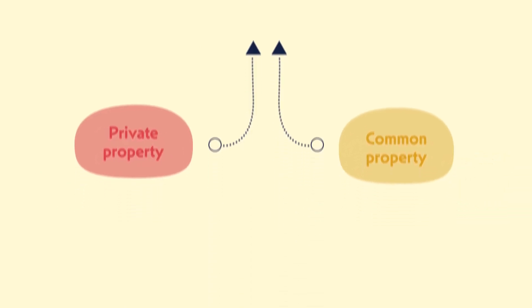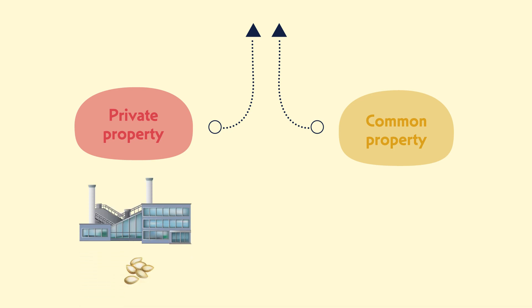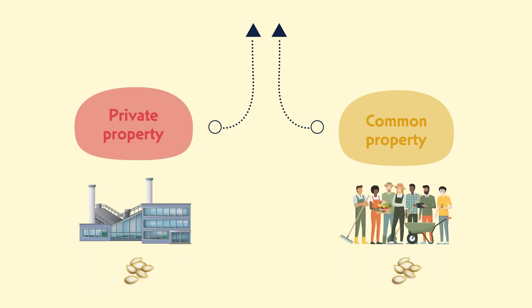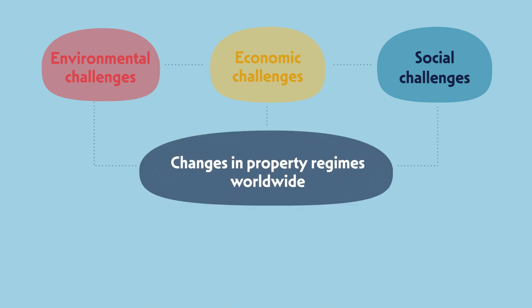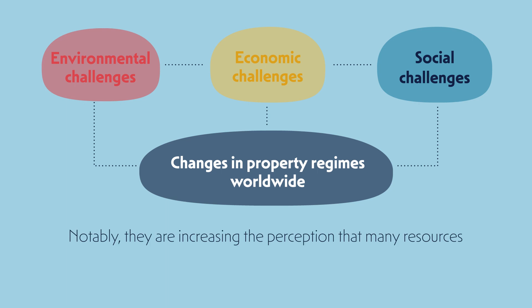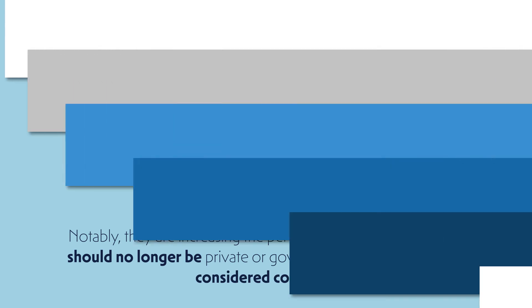For many goods, common property regimes exist parallel to private property regimes. An example are crop seeds, where some are sold by companies and others are collectively stewarded by groups of farmers. The environmental, economic, and social challenges characterizing the 21st century are prompting changes in property regimes worldwide, increasing the perception that many resources should no longer be private or government-owned, but rather considered common.